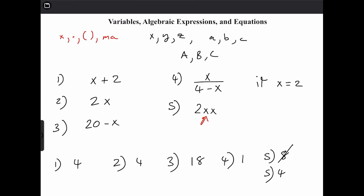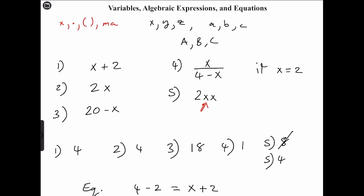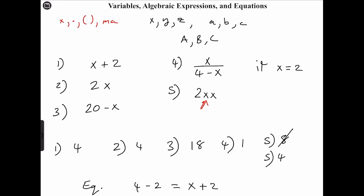This is just a brief explanation on variables, algebraic expressions, and equations. Variables are used in math when numbers are inadequate. In our expressions, we used variables to represent some unknown quantity. When that unknown quantity is 2, expression 4 gives us 1. The variable is used when numbers are inadequate, because a number represents a known quantity.